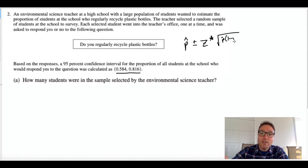So as you can see I'm writing down the equation, the formula for a confidence interval for a proportion, and this is not exactly on the reference table. What's on the reference table is the general format: statistic plus or minus a critical value times the standard error of the statistic.